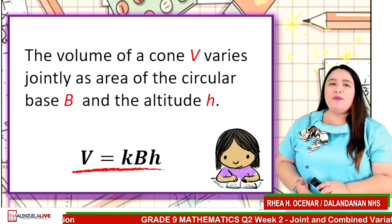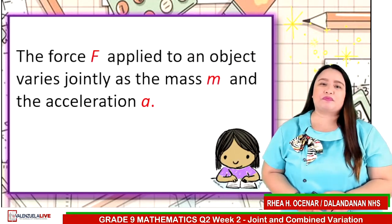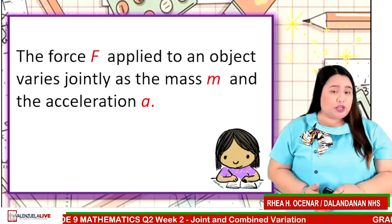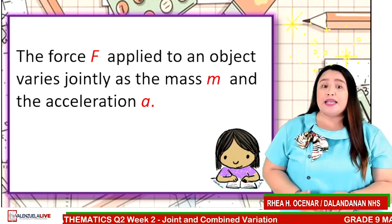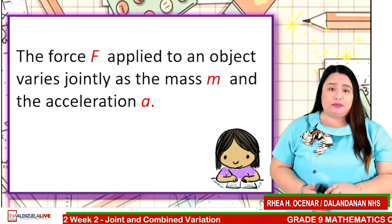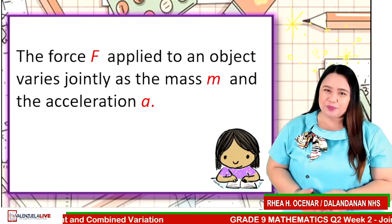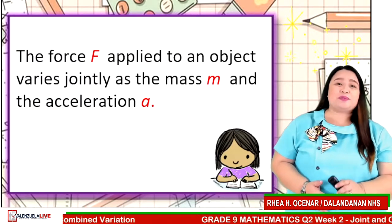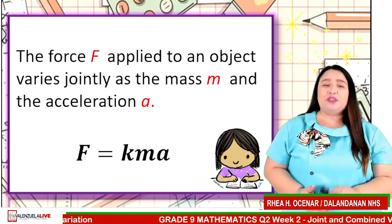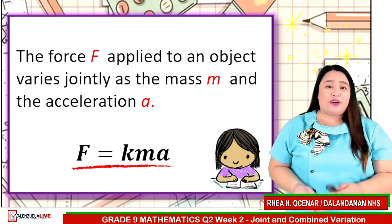Very good, students. How about this statement? The force F applied to an object varies jointly as the mass m and the acceleration a. Type your answer now. The answer is F is equal to kmA. Did you get the correct answer?